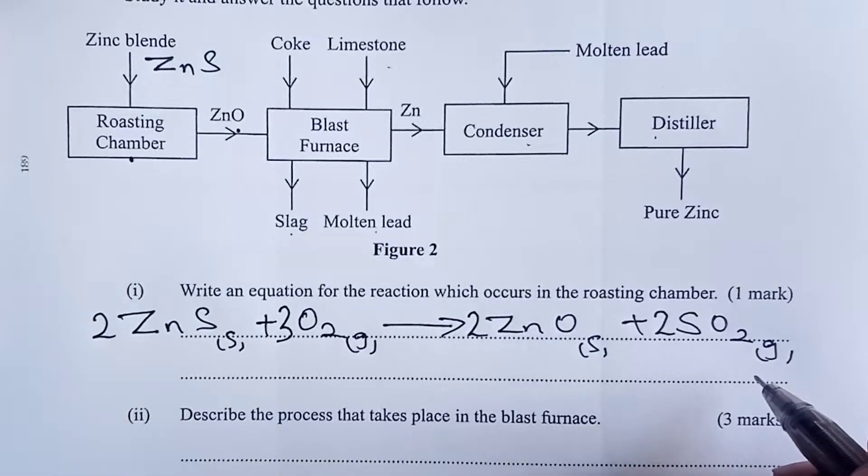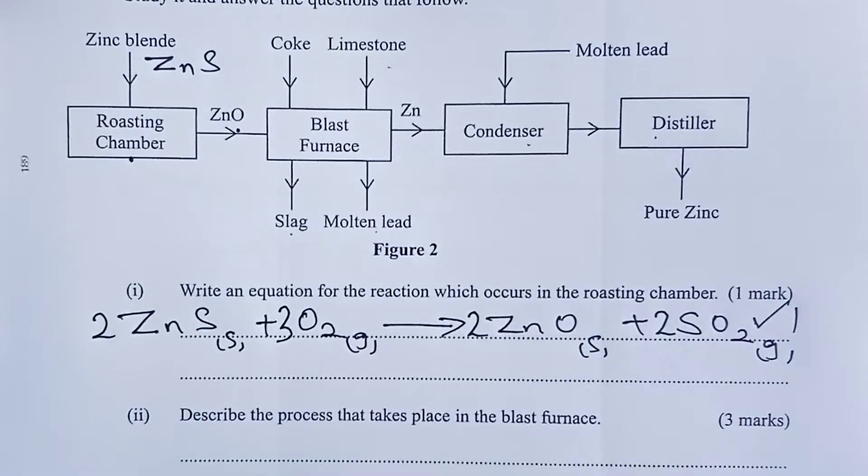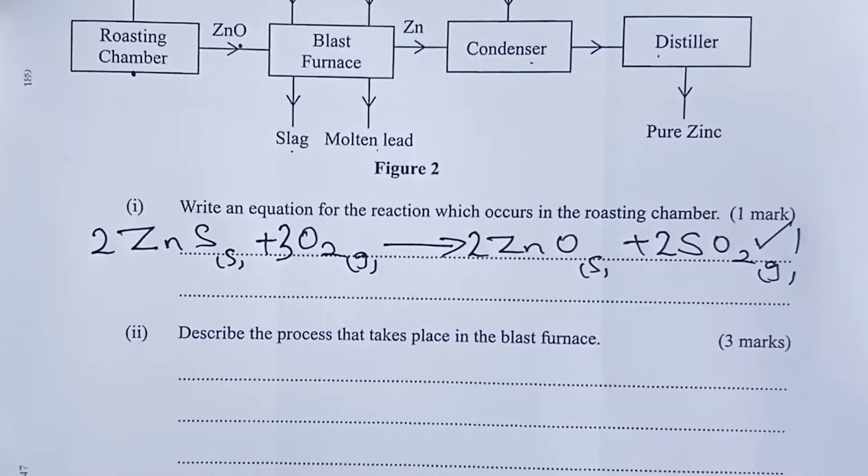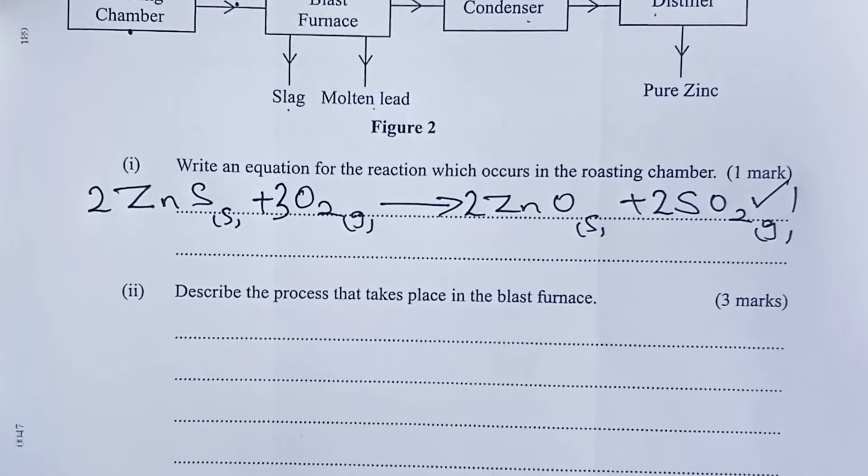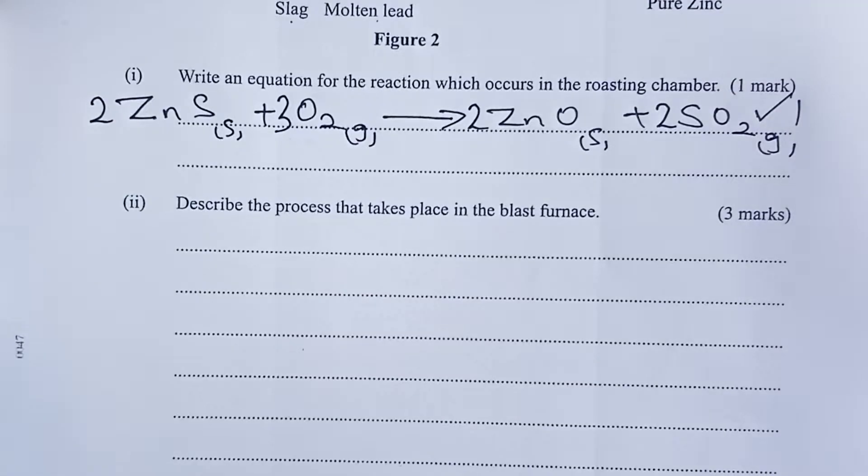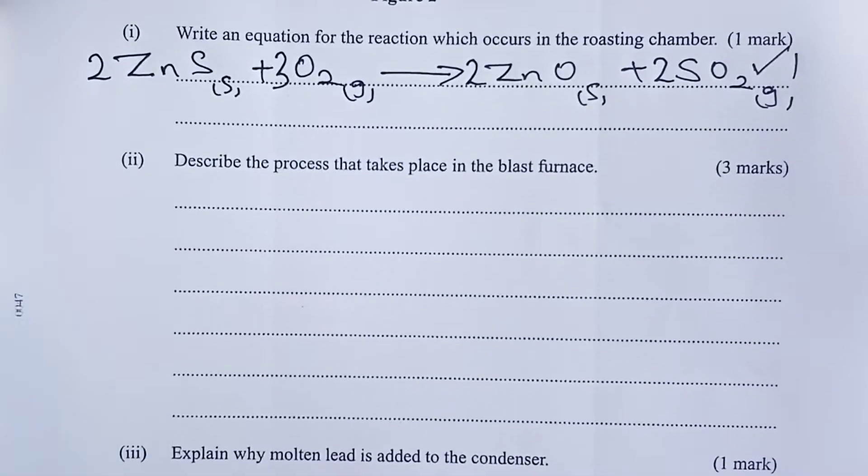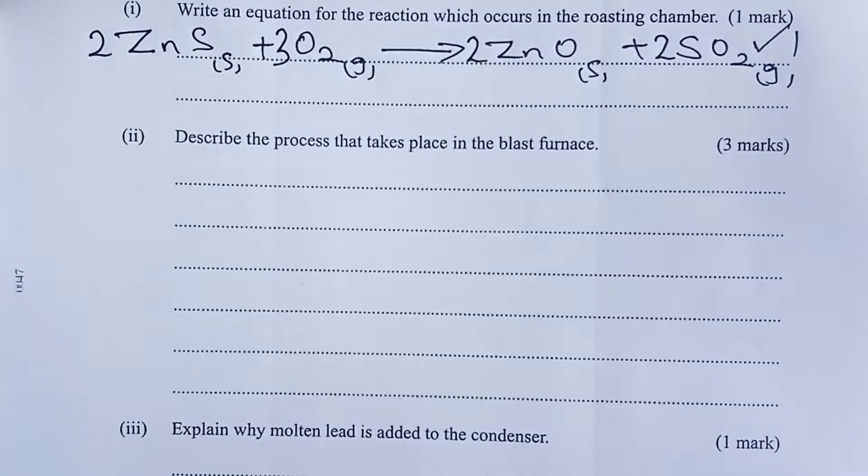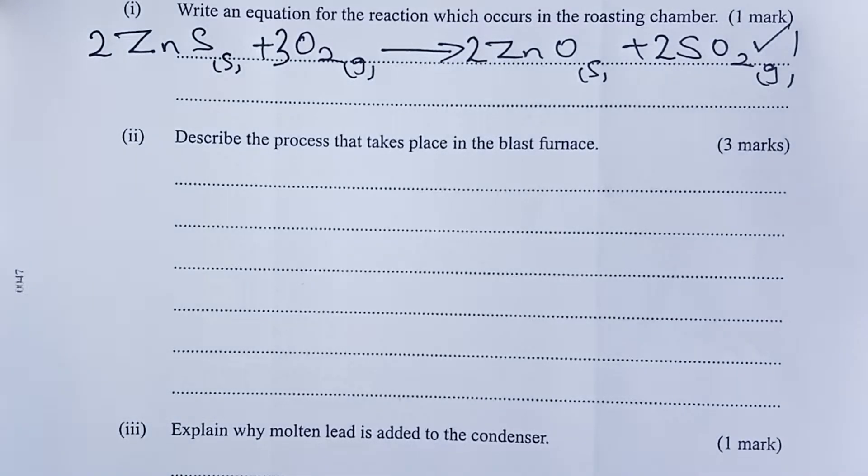This is for one mark and of course we shall look at the state symbols and whether the symbols have been joined or not for you to score the one mark.